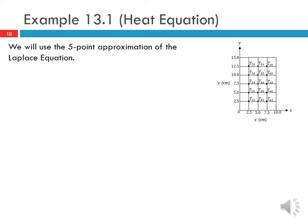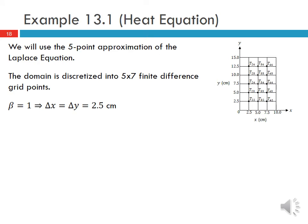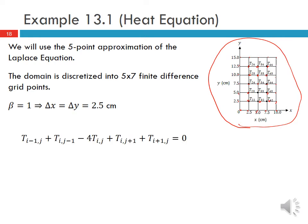We use the five-point approximation of the Laplace equation to solve this. First we discretize our domain, choosing a 5 by 7 finite difference grid point domain with beta = 1, so delta x = delta y = 2.5 cm. The unknown temperatures are at all the internal grid points. We know the temperature at all the outside grid points because those are defined by the boundary conditions.